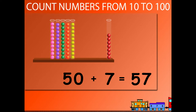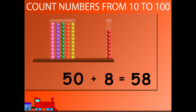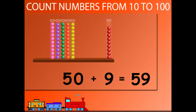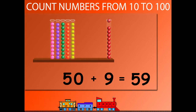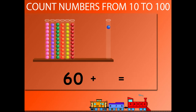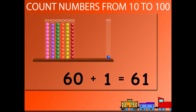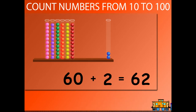50 plus 7 is equal to 57. 50 plus 8 is equal to 58. 50 plus 9 is equal to 59. 50 plus 10 is equal to 60. 60 plus 1 is equal to 61. 60 plus 2 is equal to 62.